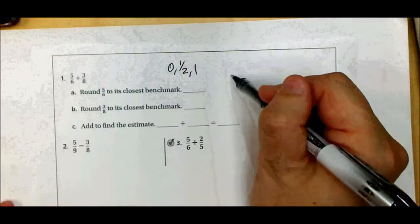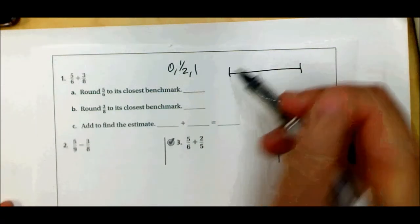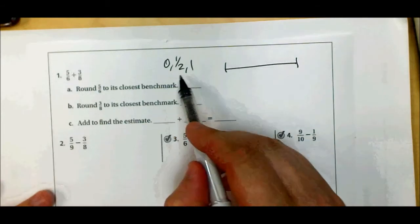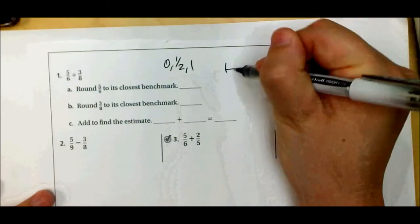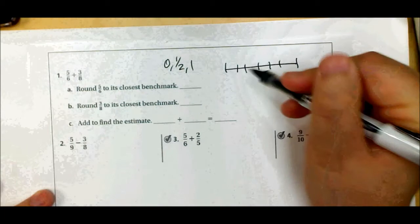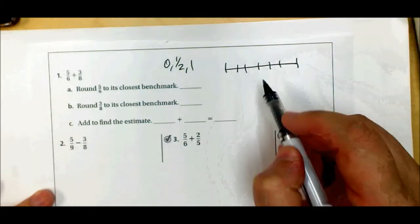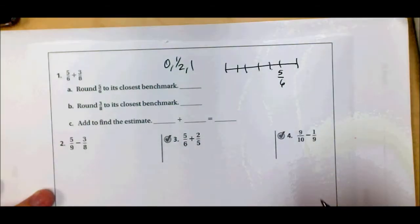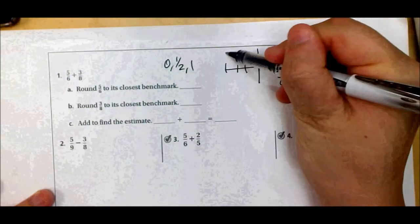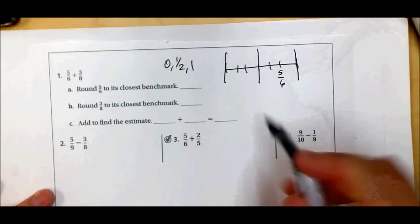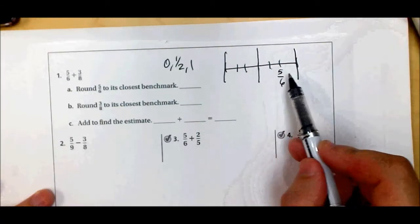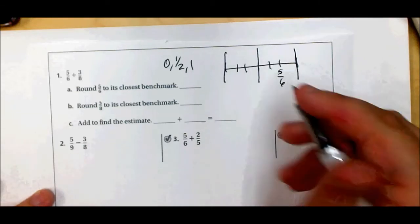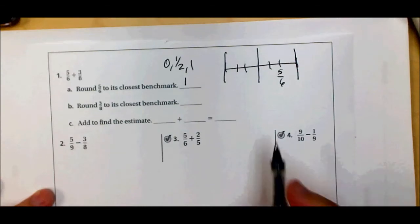I'm going to draw a number line and figure out where five-sixths is — whether it's closest to zero, one-half, or one. These are sixths: one, two, three, four, five, six. Five-sixths would be right here. One-half is here, zero is here, one whole is here. Despite my off-scale drawing, five-sixths is closest to one, so I'm rounding five-sixths to one.